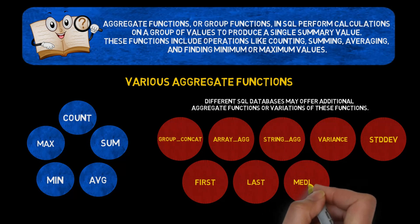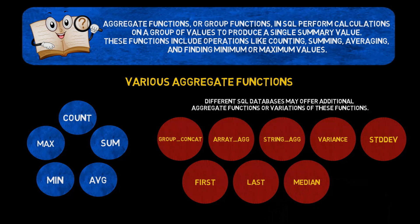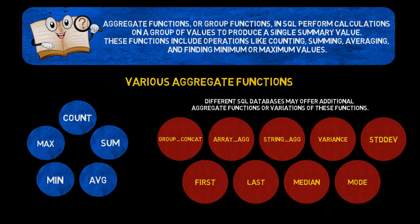Median returns the median value of a group. Mode returns the most frequent value in a group.